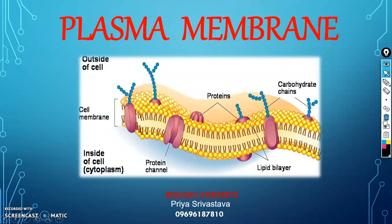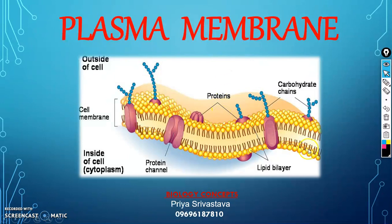The plasma membrane is basically a sheet-like structure, as you can see in this slide. It separates the internal environment of the cell from the external environment. All biological membranes are 5 to 8 nanometers thick and also control the flow of molecules across the membrane.